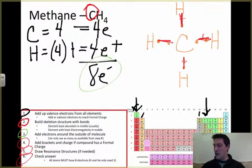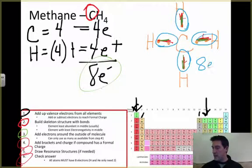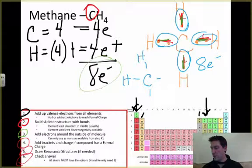Now I need to check my answer. The way I check my answer is I count up. How many valence electrons does everything have around it? This hydrogen right here has two valence electrons, so it's happy. This hydrogen has two valence electrons, so it's happy. This one has two, so it's happy, and this one has two. Now carbon would like to have eight, so remember it's sharing. It's got two from this bond, two from this one, two from this one, and two from this bond, which means it has eight electrons around it, and everybody's happy. So this is the structure of methane.